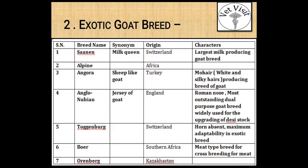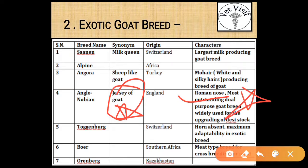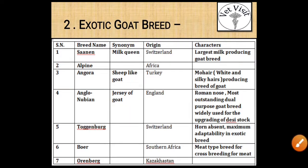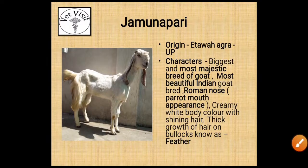The next breed is Anglo-Nubian. Its synonym is 'Jersey of Goat' — mark it as star. Its origin is England, and its characters are: roman nose, most outstanding dual purpose goat breed, widely used for the upgrading of desi stocks — mark this point as star. Toggenberg — its origin is Switzerland.